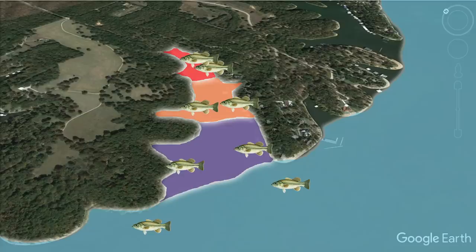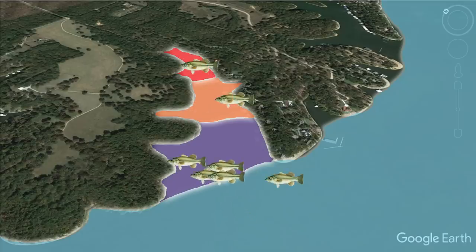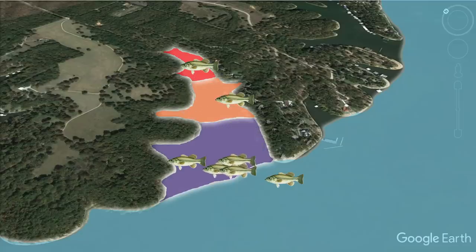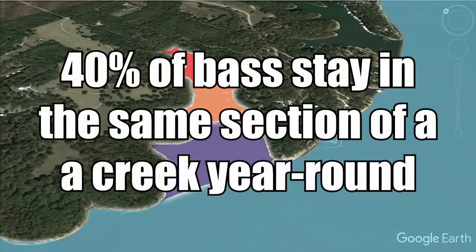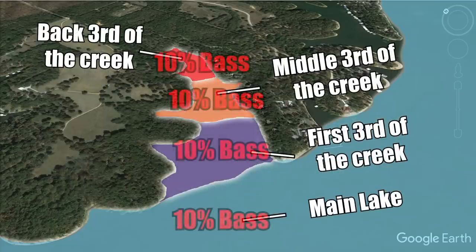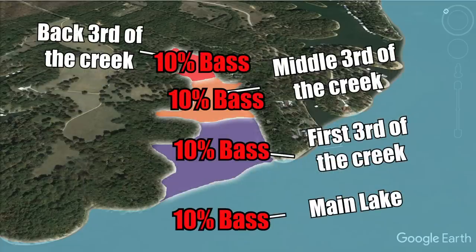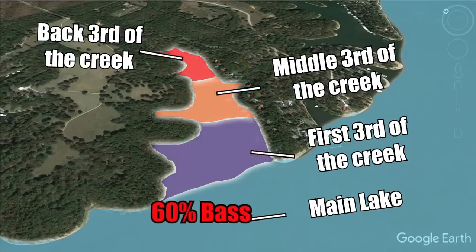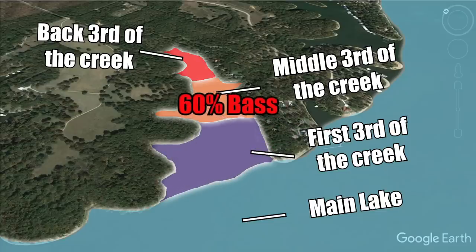Bass aren't always evenly distributed from the main lake all the way to the back of a creek. Many will migrate from the main lake into the backs of creeks and back out depending on seasonal patterns, water temperature, current, forage, and water quality. Based on my experience — not scientifically proven — I'd estimate about 40% of bass in a creek arm stay in the same section most of the year, while about 60% move to different sections depending on conditions.